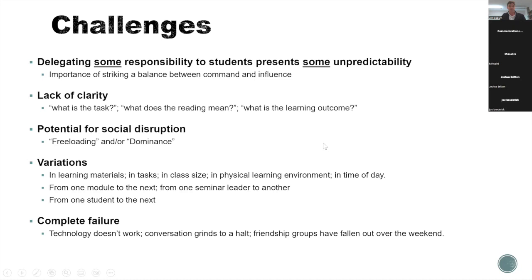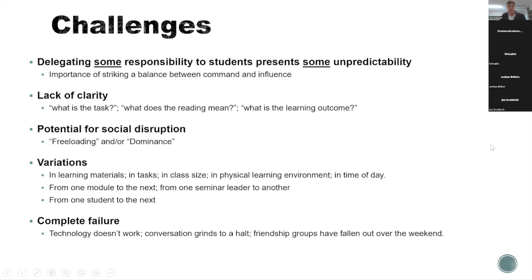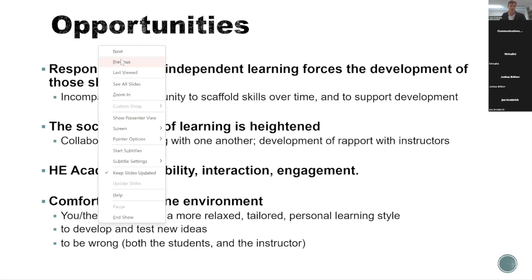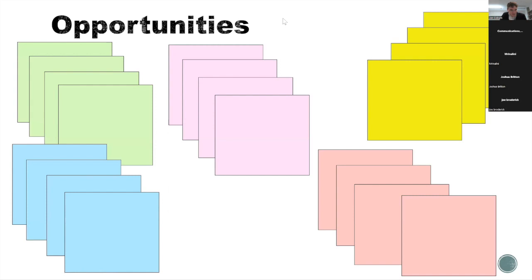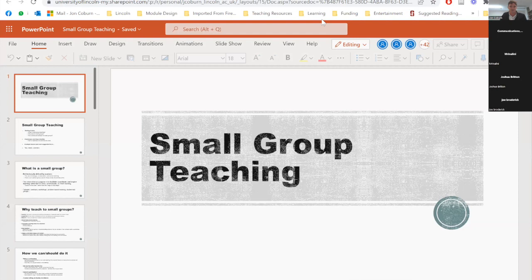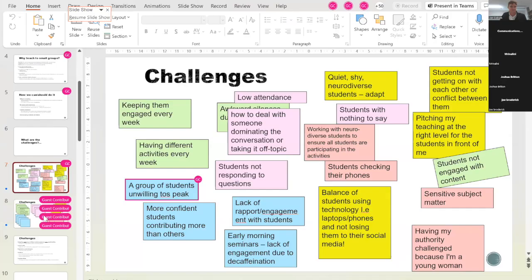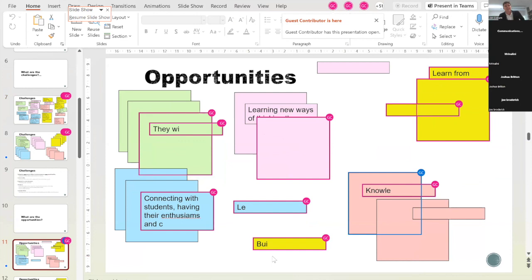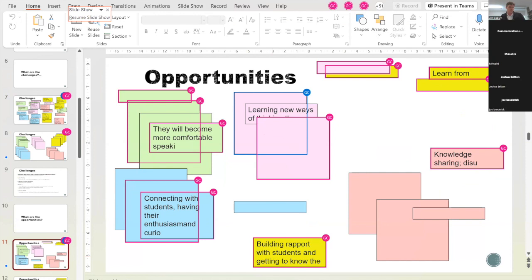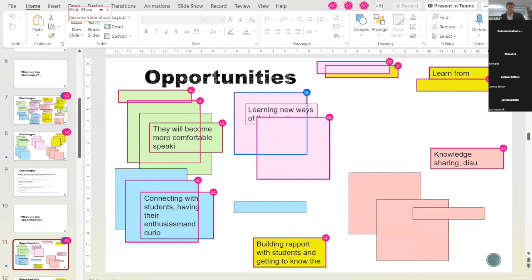We can think more about the opportunities we might have rather than the challenges. If you want to add your thoughts to the slides on opportunities — what things are you looking forward to? What opportunities are provided by small group teaching? Building rapport with students is a vitally important one, something we can do in an incomparable way within a small group that we couldn't do in a lecture. You can share your enthusiasm — we can completely change the dynamic of a room with our own enthusiasm and desire for the subject.